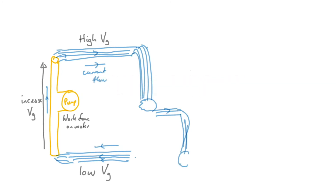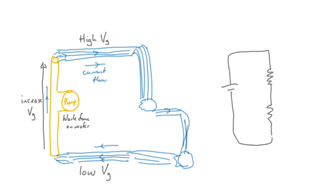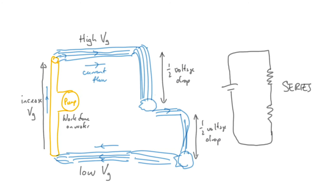Now let's look at a series circuit. Here you have two miniature waterfalls all flowing from the same source. If the resistors are equivalent, you get half the voltage drop across each one. So the voltage is split between them. Also, the current is the same all the way around the water circuit, and in a series circuit the current is consistently the same throughout. That's a quick summary of series and parallel circuits using the waterfall analogy.